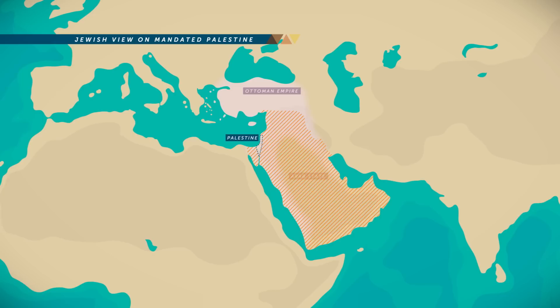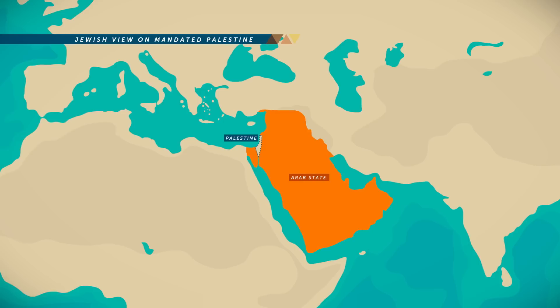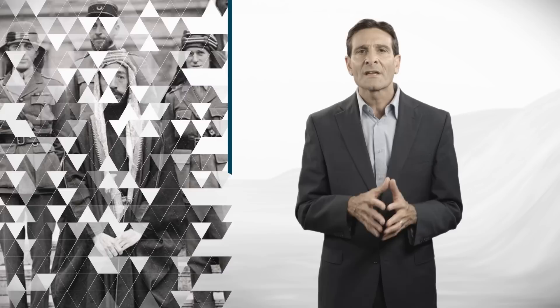The Jewish people had a different perspective. Palestine was their ancient homeland. It had been Turkish territory, not Arab territory, since 1517. And the Arabs were given basically all of the Turks' other territory, except for the small portion given to the Jews.